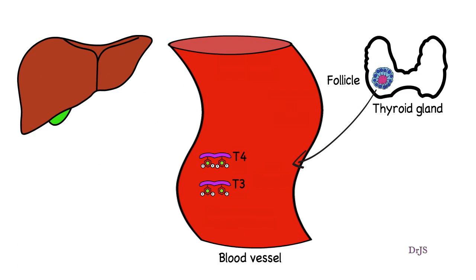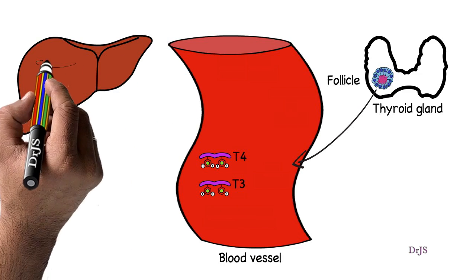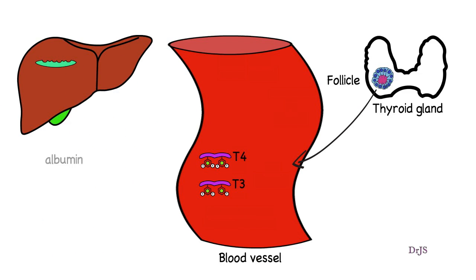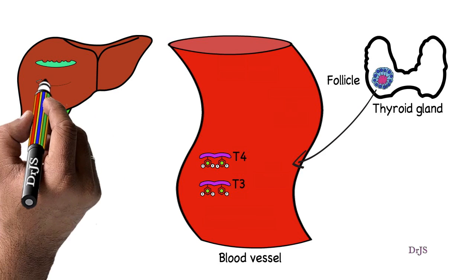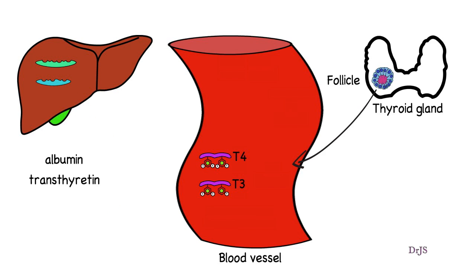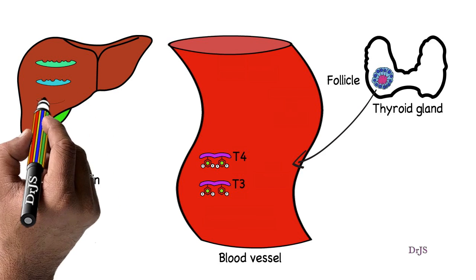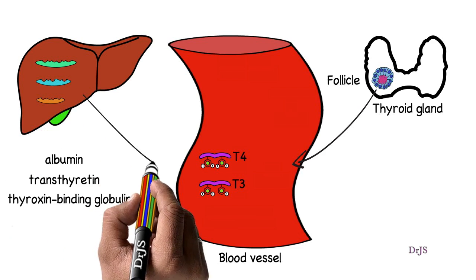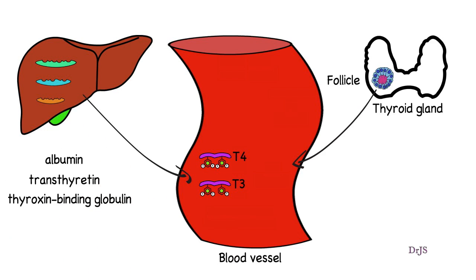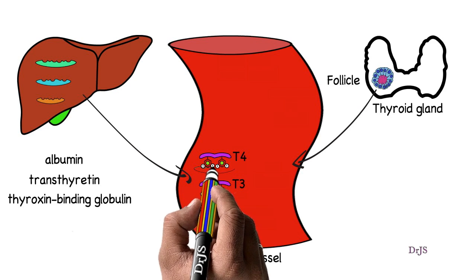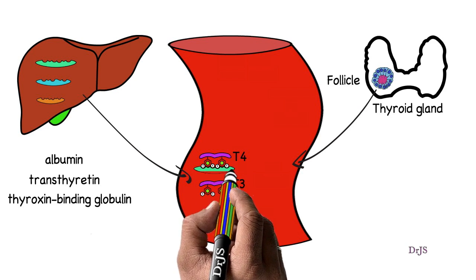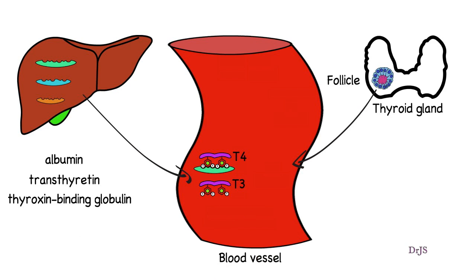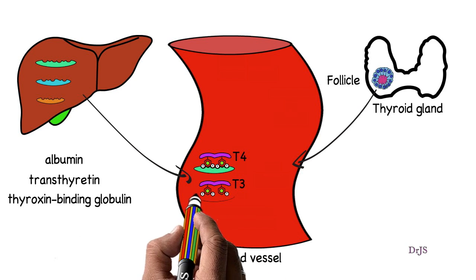As the T3 and T4 hormones come into the blood, they are trapped by special proteins which are synthesized by the liver. These proteins are albumin, transthyretin, and globulin. Globulin is also called thyroxin binding globulin or TBG.